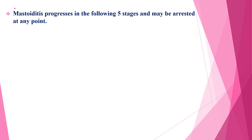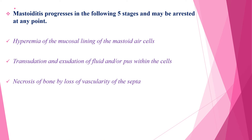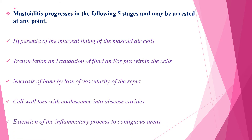Mastoiditis progresses in the following three stages and may be addressed at any point by treatment. The first stage is hyperemia of the mucosal lining of the mastoid air cells, then transudation and exudation of fluid and/or pus within the cells, and necrosis of bone by loss of vascularity of the septa. This is followed by cell walls becoming loose and coalescing into abscess cavities, then extension of the inflammatory process to contiguous areas.